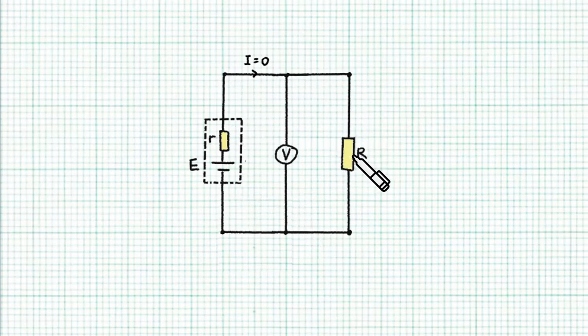When you connect the external resistance, however, then you start to draw a current from the battery. So current flows through the circuit, including through the internal resistance. So what the voltmeter now reads is the terminal PD.